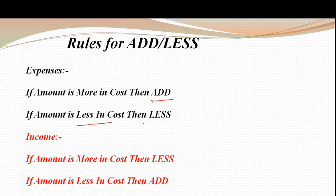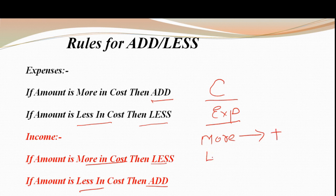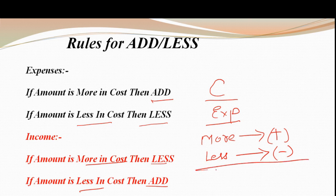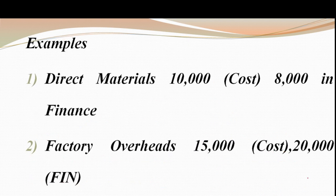अगर amount less है cost में तो आपको less करना है। Income में भी same है — अगर amount more है cost में तो less करना है, और less है cost में तो add करना है। देखो — costing में expenses ज़्यादा रहा (more) इसका मतलब plus करना है। अगर costing में expenses कम रहा (less) इसका मतलब less करना है। Income में reverse rule apply होता है।